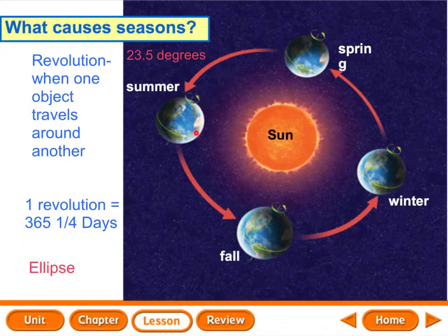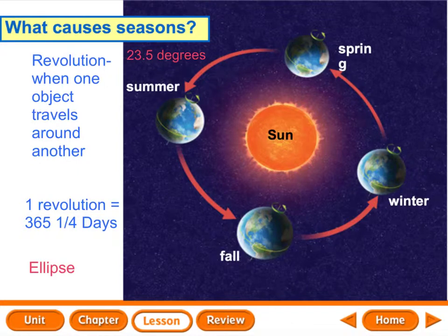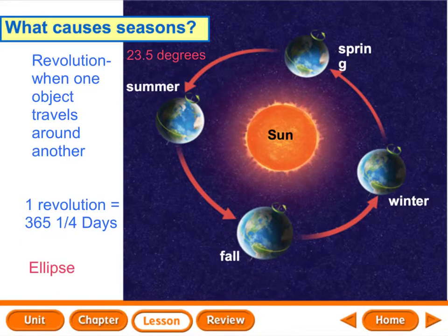You have a northern hemisphere and a southern hemisphere — hemispheres are halves. 'Hemi' means half of a sphere. Because of the tilt and revolution, tilt plus revolution equals the seasons. Summer, fall, winter, and spring are all because of revolution and the 23 and a half degree tilt.